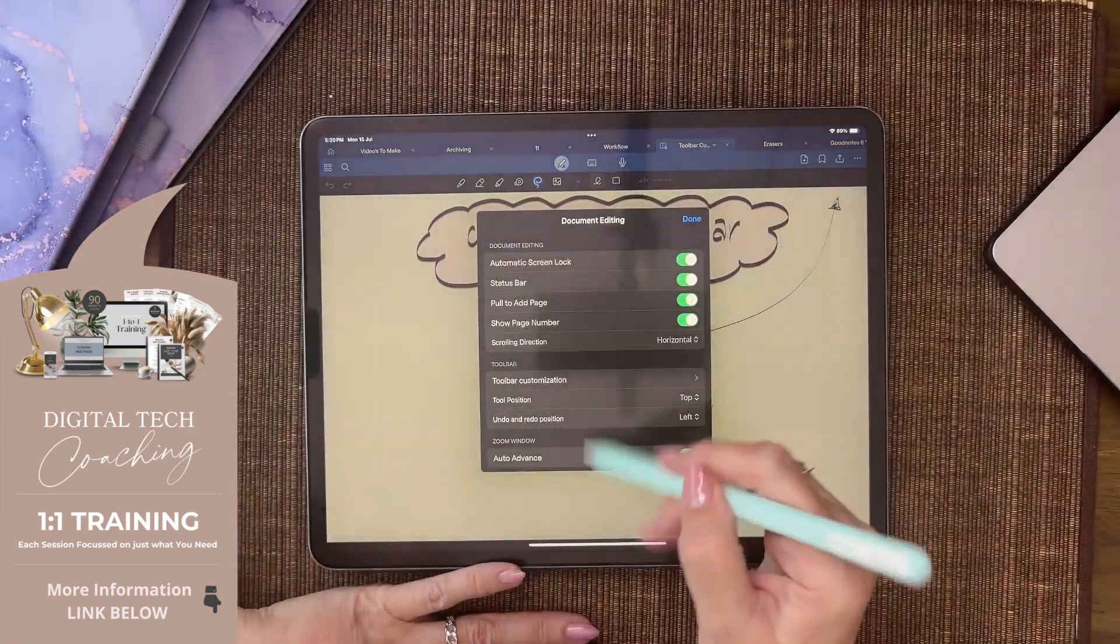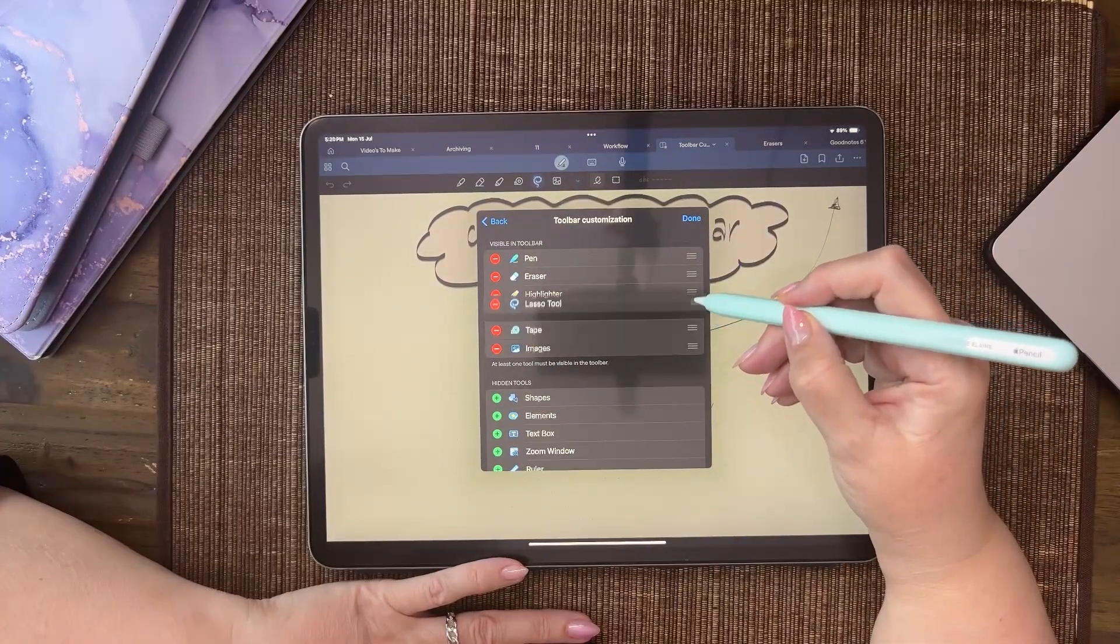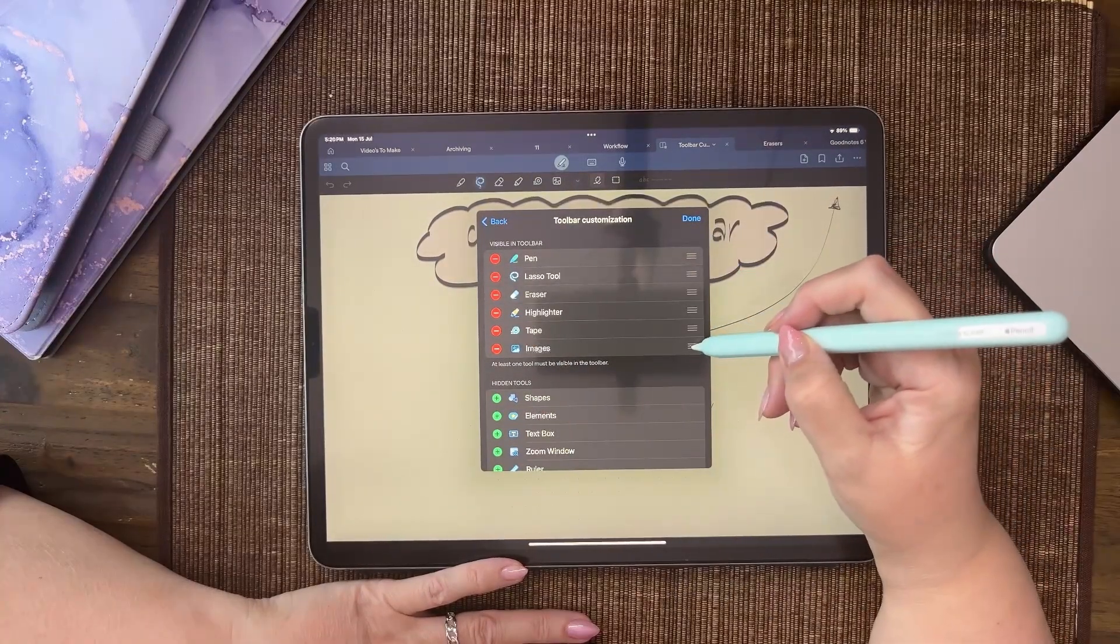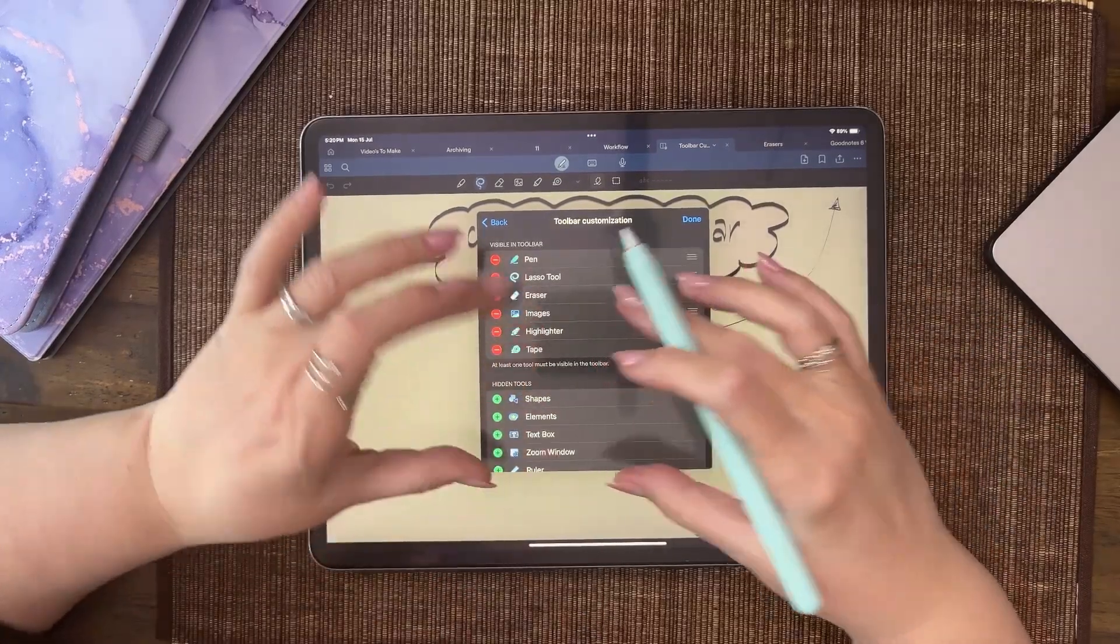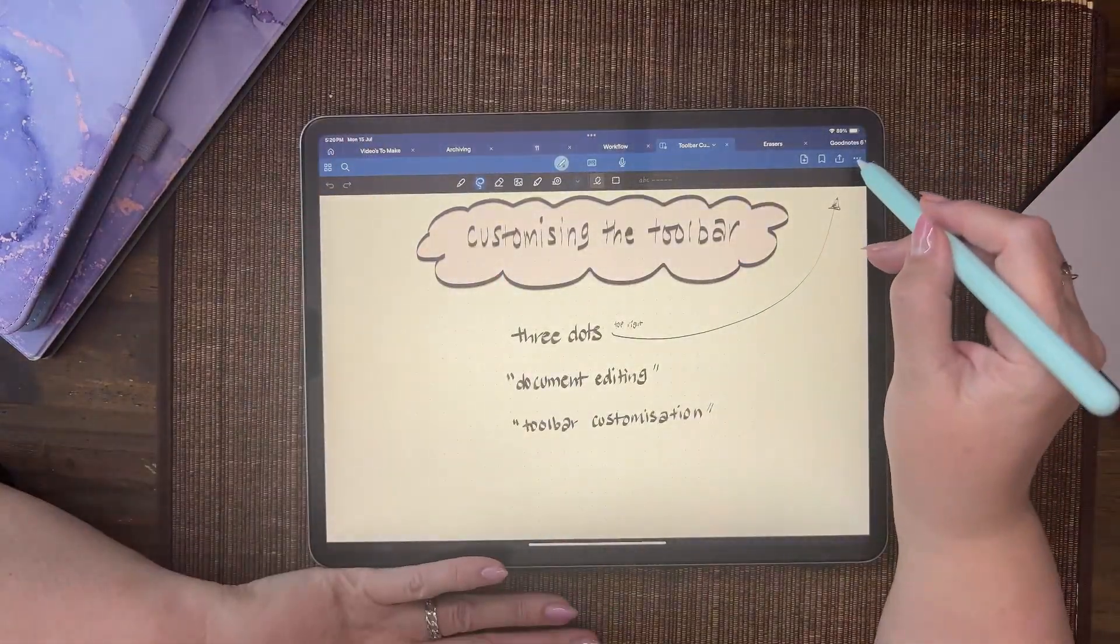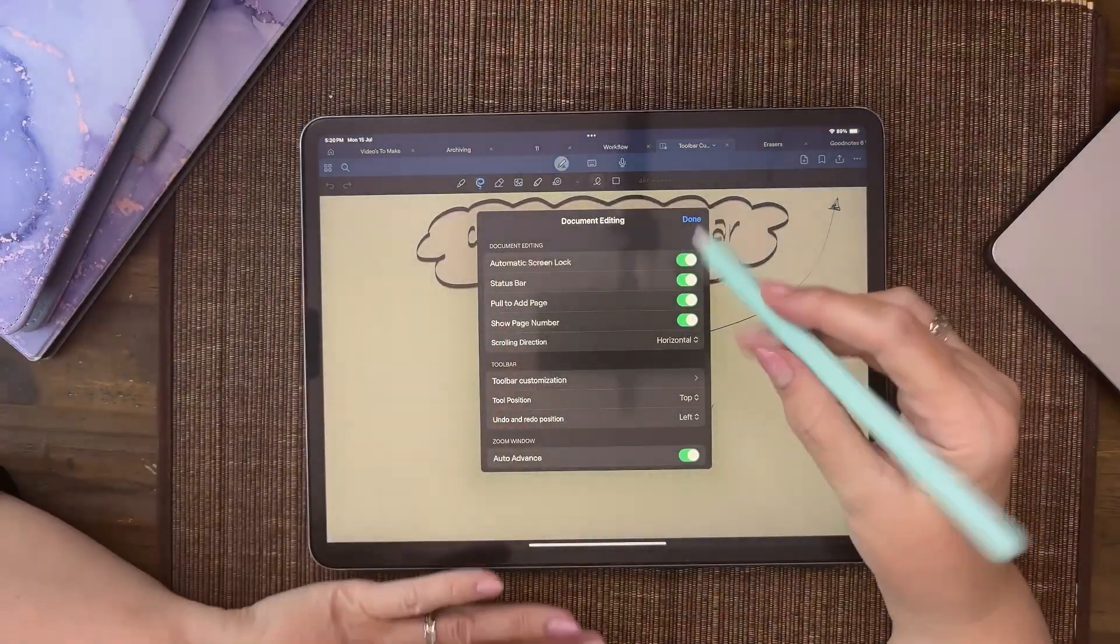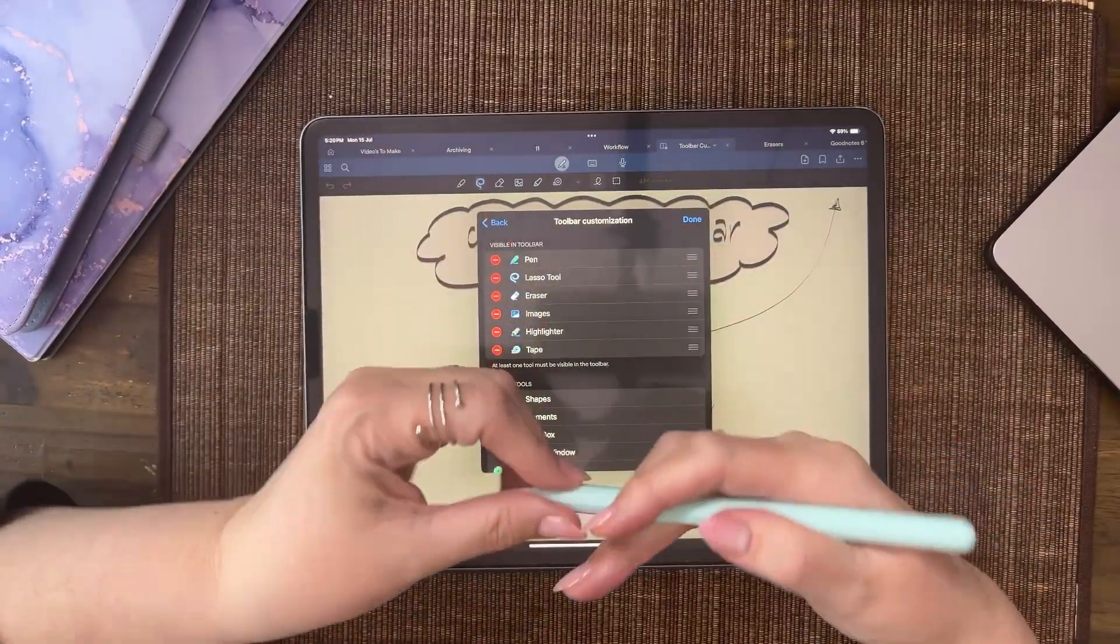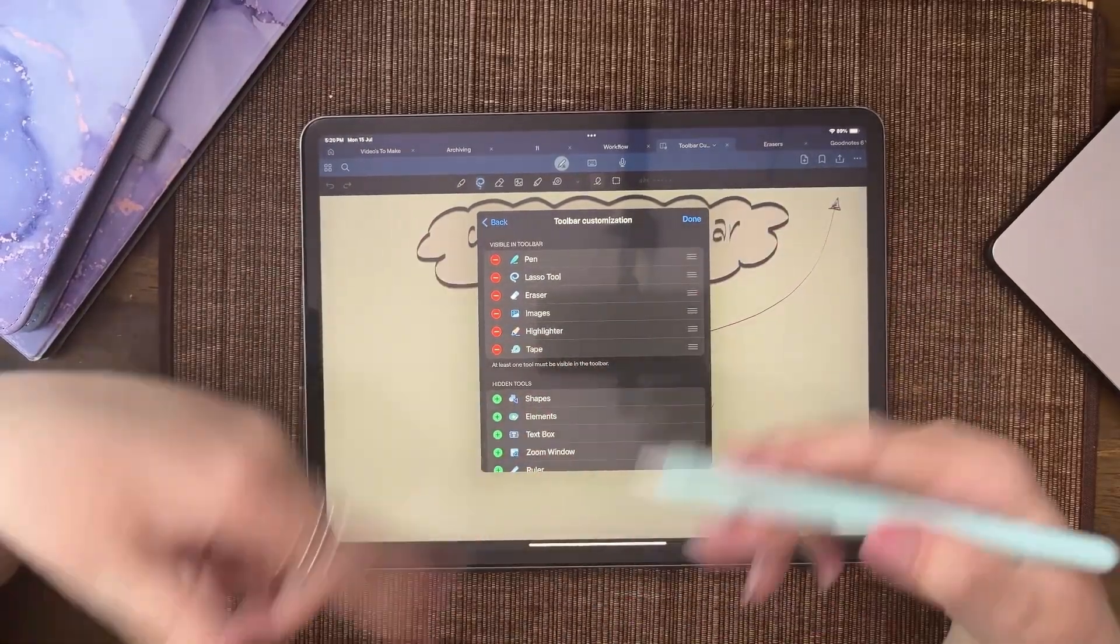To reorder items, press and hold and drag. If you don't get a response, sometimes you just need to click out and click back in again. Sometimes the screen doesn't realize what you're trying to do, and there's nothing wrong with it—you just need to refresh or start again.